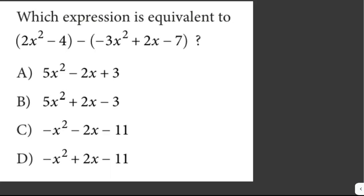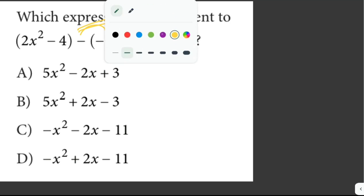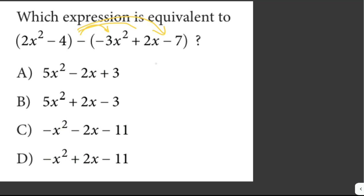Which expression is equivalent to 2x² - 4 - (-3x² + 2x - 7)? We have to distribute the negative sign to the expression inside the parentheses first, then combine like terms, then simplify. So this becomes 2x² - 4 + 3x² - 2x + 7.